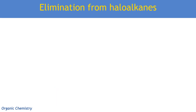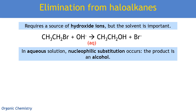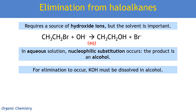First, we'll look at elimination from a haloalkane. We need a source of hydroxide ions, such as potassium hydroxide or sodium hydroxide, but the solvent is also really important. If we use hydroxide ions in aqueous solution, the much more common nucleophilic substitution occurs — the OH⁻ attacks the carbon and swaps places with the Br⁻, giving an alcohol. For elimination to occur, the potassium hydroxide needs to be dissolved in an alcohol solvent such as ethanol, with no water present.